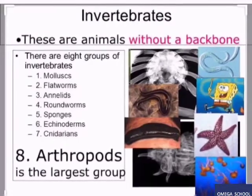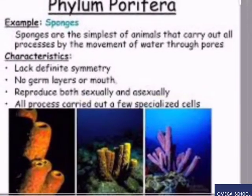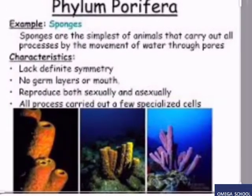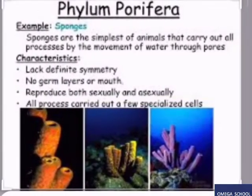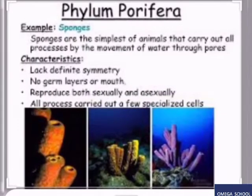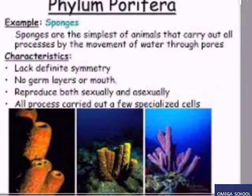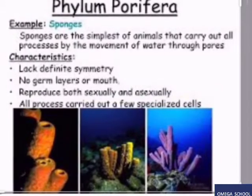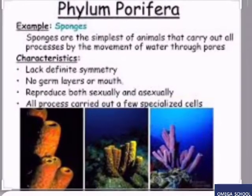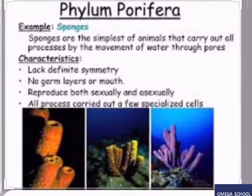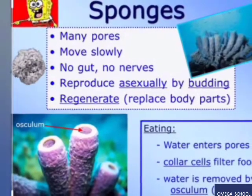Let's look at them one by one. The phylum Porifera — we call them sponges. Sponges are the simplest invertebrates. They carry out functions through a few specialized cells because they do not have a gut or nerves. They reproduce both sexually and asexually, and they move slowly.